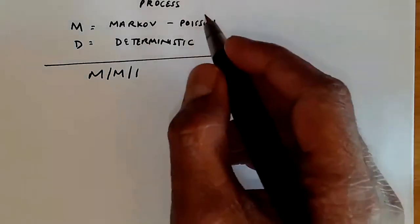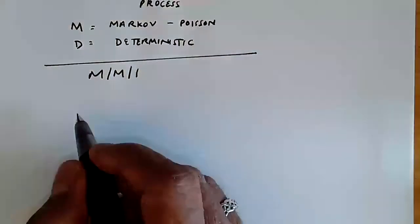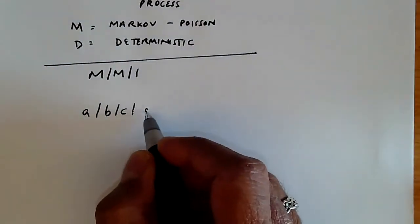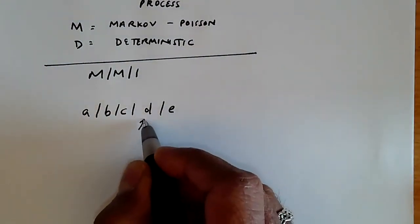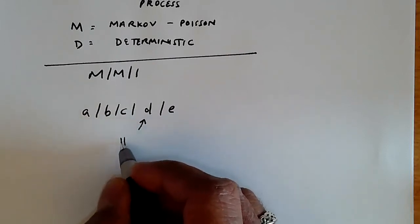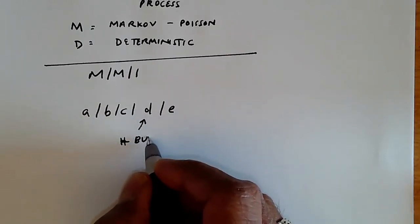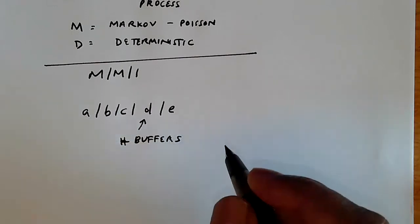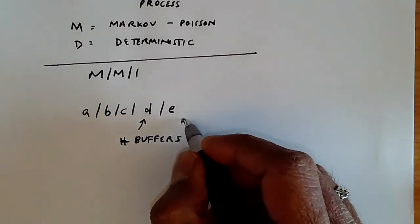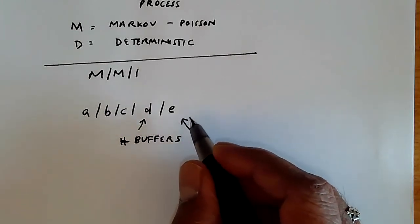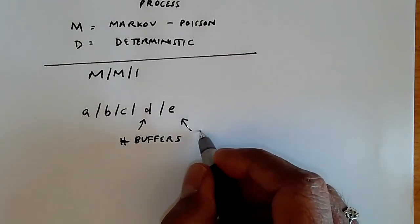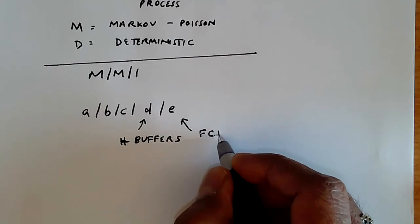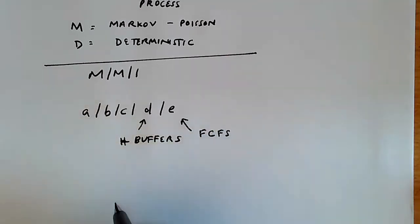We can also have extended forms of notation where you have A slash B slash C slash D slash E, where this is the number of buffers available. In our case, we'll assume infinite buffers for now. And this can be the service discipline, how are the customers or jobs served. We'll usually assume first come first served, which is abbreviated FCFS. But of course, more complex systems can also be studied.